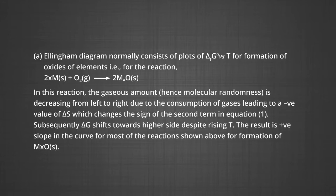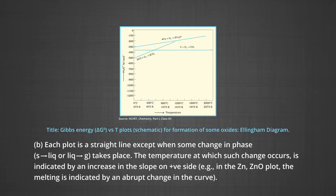Ellingham diagrams normally consist of plots of ΔG° versus T for the formation of oxides of elements. For the reaction, metal atoms react with oxygen to form metal oxide. In this reaction, the gaseous amount and hence molecular randomness is decreasing from left to right due to the consumption of gases, leading to a negative value of ΔS, which changes the sign of the second term in equation 1. Subsequently, ΔG shifts towards the higher side despite rising temperature. The result is a positive slope in the curve for most of the reactions shown for formation of metal oxide. Each plot is a straight line except when some change in phase — from solid to liquid or liquid to gas — takes place. The temperature at which such a change occurs is indicated by an increase in the slope on the positive side.